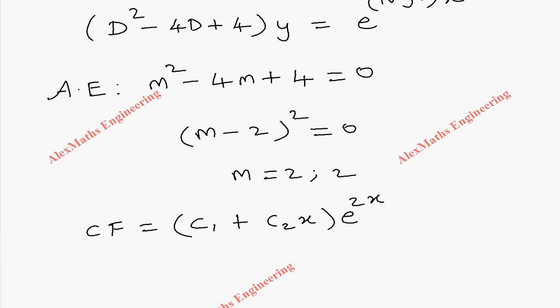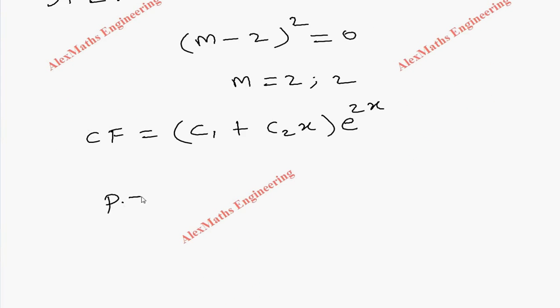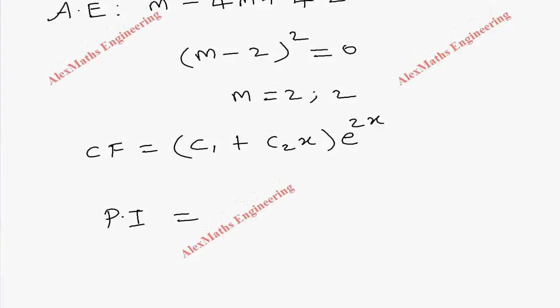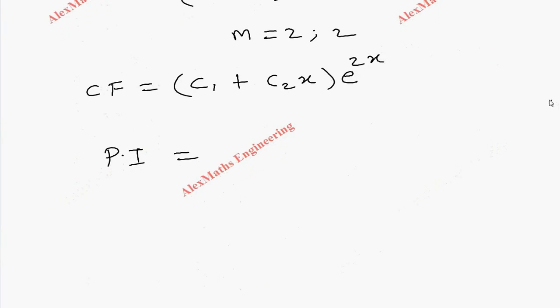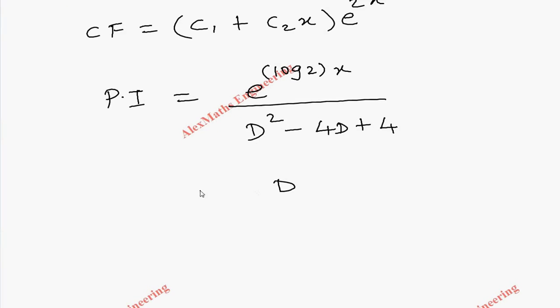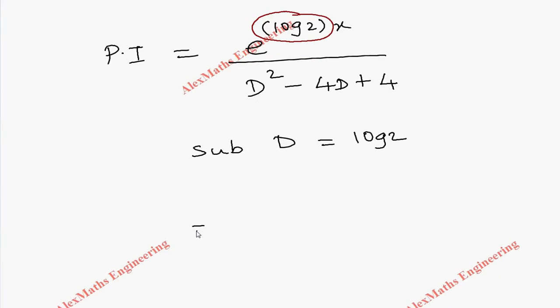Coming to particular integral, we have to write the right-hand side: e^(log2·x) divided by (D² - 4D + 4). Now wherever D is there, we have to substitute D = log 2, because e^(ax) is a general form. Instead of a, we have log 2, so we have to substitute this.